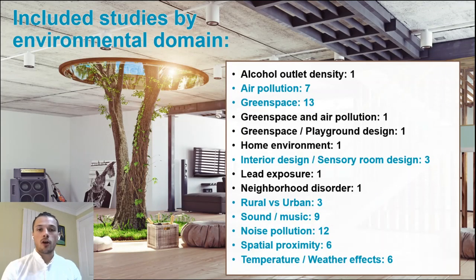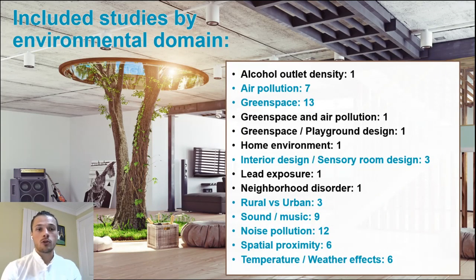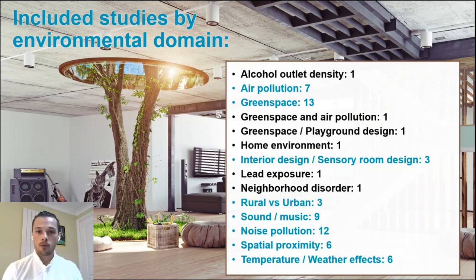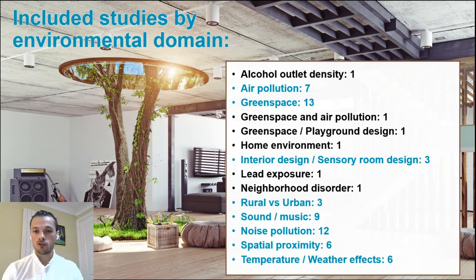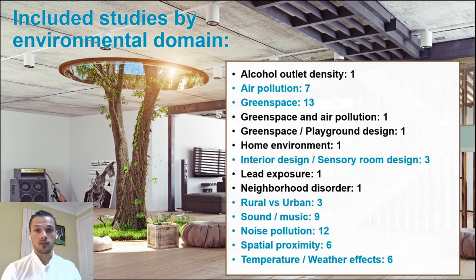This is an overview of the different studies retrieved by environmental domain. As you can see, the categories include air pollution, green space, music, noise pollution, spatial proximity, and temperature and weather effects. These are the larger categories, and we're exploring whether meta-analysis is possible for each.